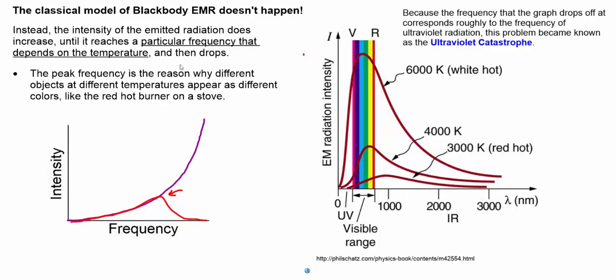So, let's look at this a little bit closer. Instead, the intensity of the emitted radiation does increase until it reaches, and this is the key bit here, a particular frequency that depends on the temperature, and then it drops. So, you get a certain temperature of metal, it might drop after red, or white light, or ultraviolet. And that experimentation that doesn't match reality is what troubled physicists. And this is actually known as the ultraviolet catastrophe.